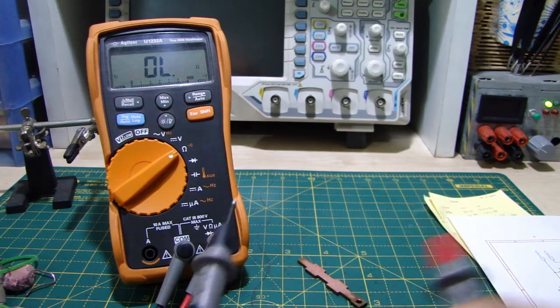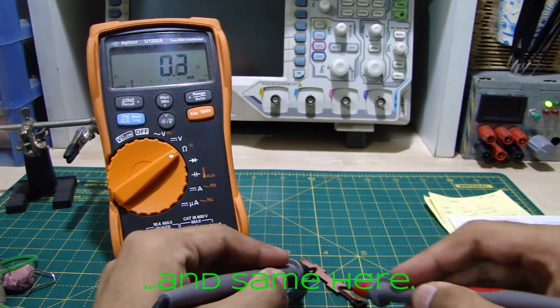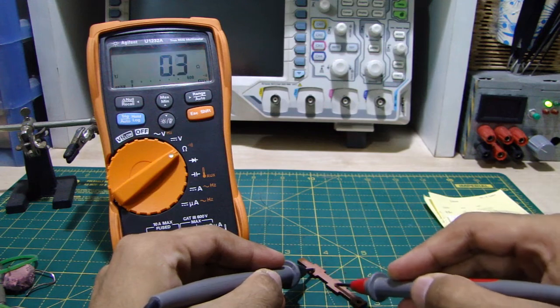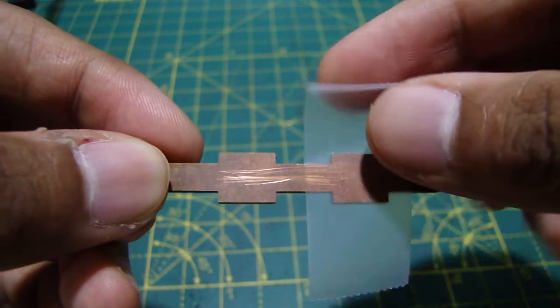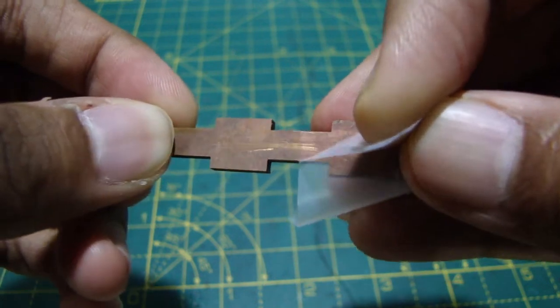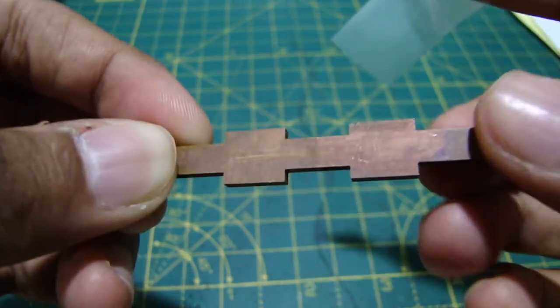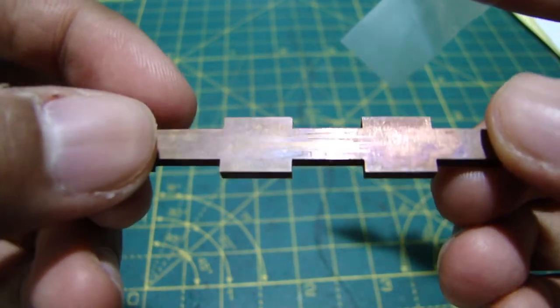Once the copper is clean, the surface conductivity shows a large improvement, perfect for railguns. The only problem is that they oxidize within hours, a problem I'm yet to solve. Maybe that's for another video. Stay tuned.